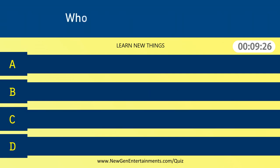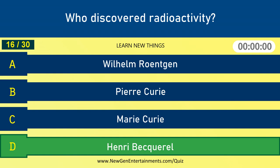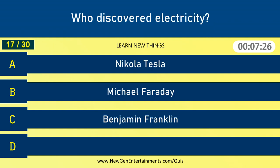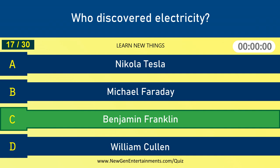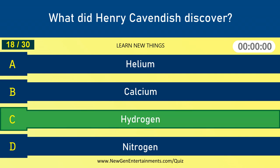Who discovered radioactivity? Henri Becquerel. Who discovered electricity? Benjamin Franklin. What did Henry Cavendish discover? Hydrogen.